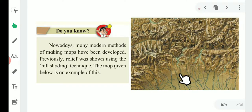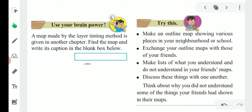With the help of hill shading method, use your brain power. A map made by layer tinting method is given in another chapter. Find the map and write its caption in the blank box below. You have to find the map in other chapter.